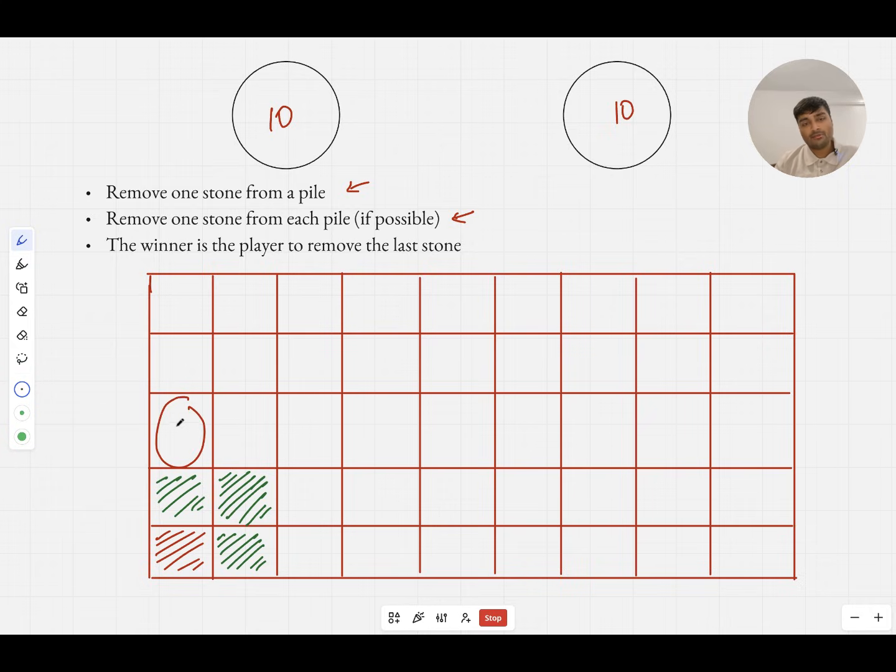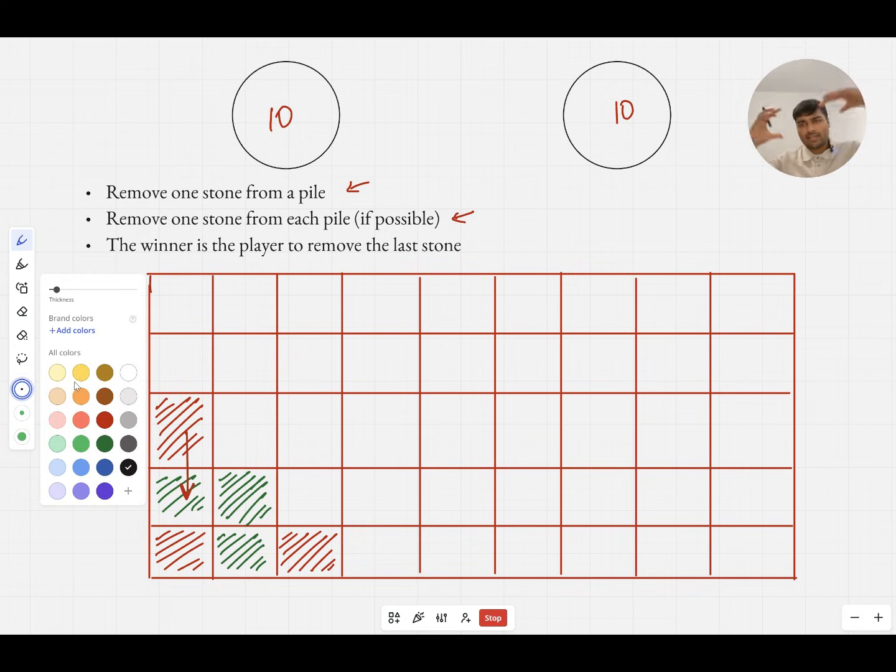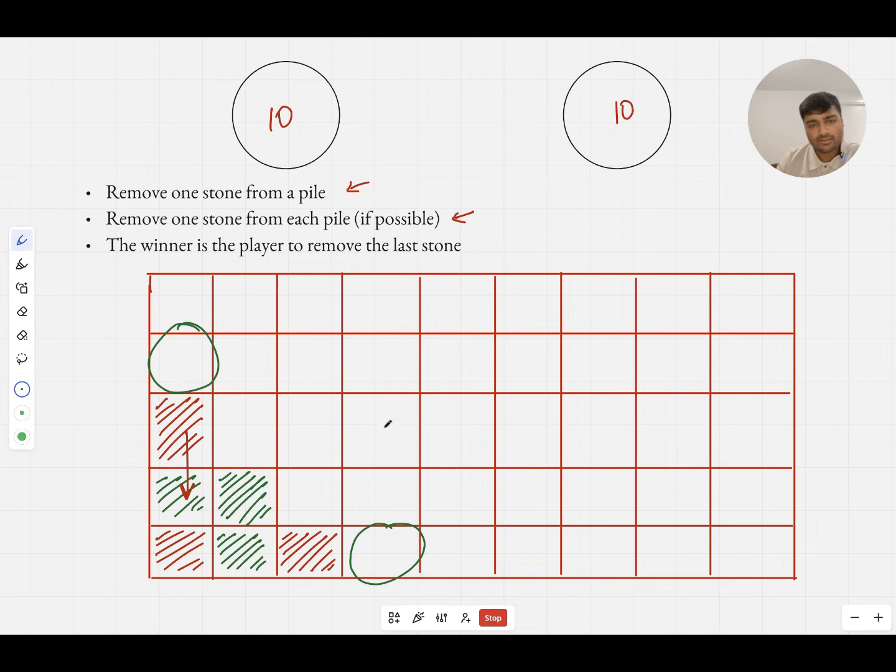So we get this nice little shape here, but let's continue colouring in this grid. So I know that this square here, 0, 2, would be red, because if it was about to be my turn, and there was 0 stones in one pile and 2 stones in the other pile, I could only remove, the only thing I could do is remove 1 stone from this pile, and then that forces the other player onto a green square, which means that they will win, and thus I will lose. And so that would have to be red. And similarly, this would also have to be red. And we can actually spot that there's going to be some nice symmetry along the line y equals x, if you think of it like an xy axis.